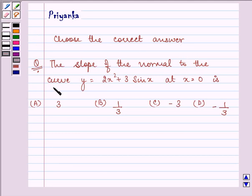The slope of the normal to the curve y = 2x² + 3sin(x) at x = 0 is: 3,